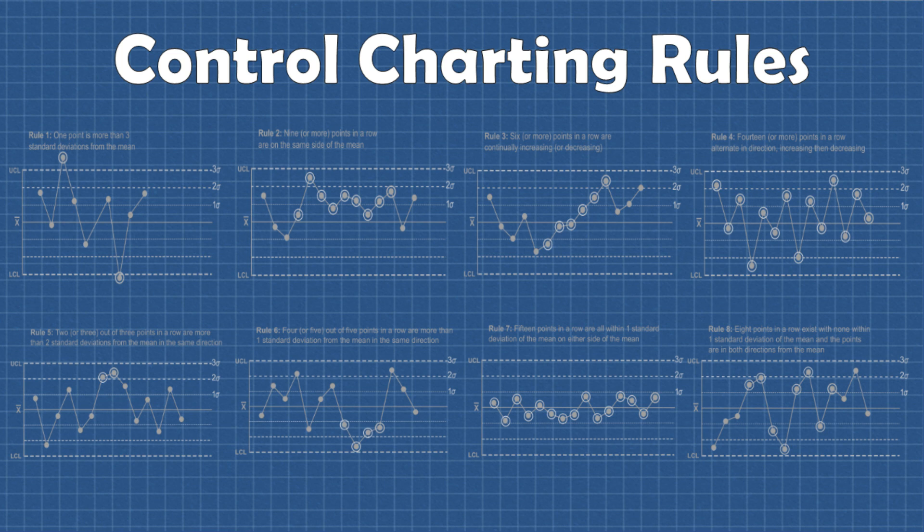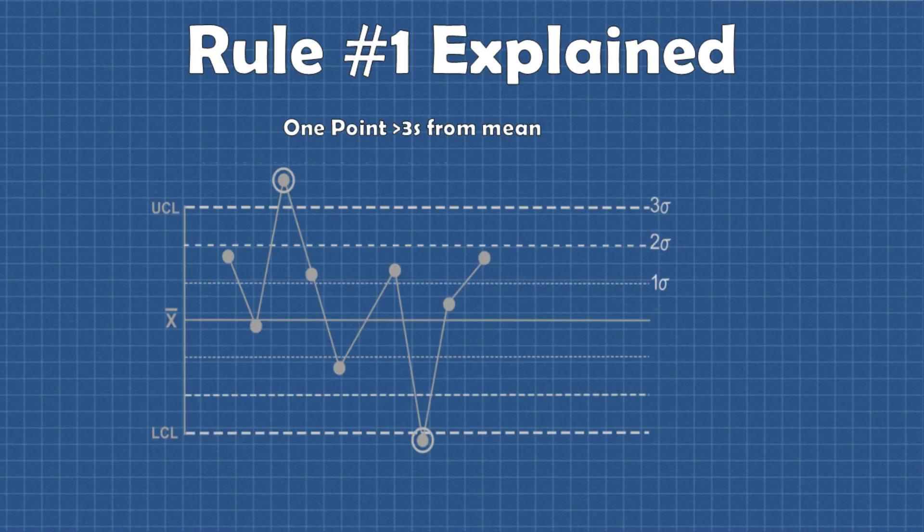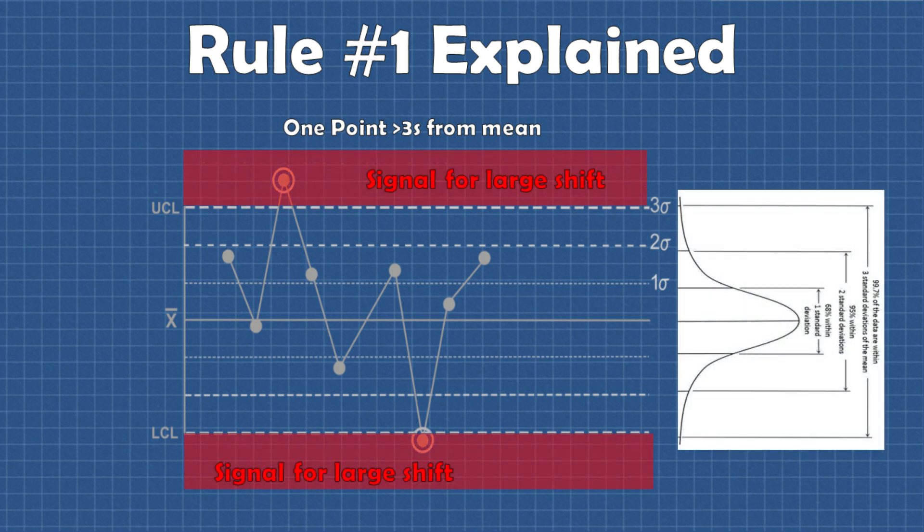Alright now for some final points about using these eight rules. First of all it's important to realize that rule number one will capture essentially all the large process shifts. So if you're getting signals from rule one then the other control charting rules will provide little additional insight into the control of the process because you already know it's not stable.